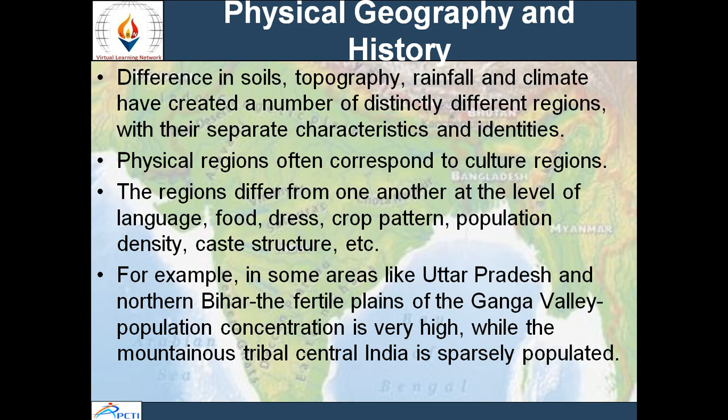Many regions are associated with rivers, and regions associated with rivers naturally have more population. For example, in areas like Uttar Pradesh or Bihar, there is a lot of fertile land known as the Ganga Valley, which has very high population concentration. Whereas towards the Himalayas, it is very sparsely populated because habitat conditions are not good, the land is not fertile, and living is a little difficult.